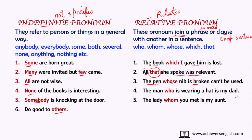'The man who is wearing a hat is my dad' — joining the description to the subject. 'The lady whom you met is my aunt' — joining the phrase with the clause. So interrogative pronouns ask a question like 'Who is that man?' or 'Whom are you talking to?', but when the same words join a phrase to a clause, they become relative pronouns. Friends, here I am ending with pronouns.